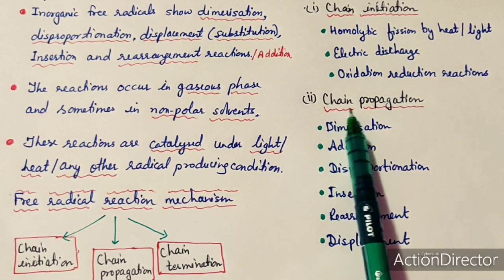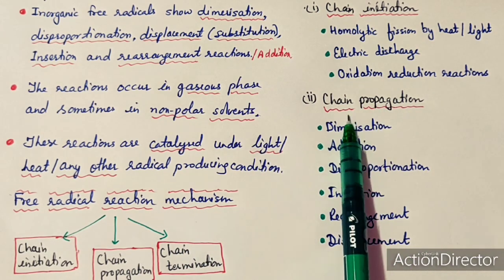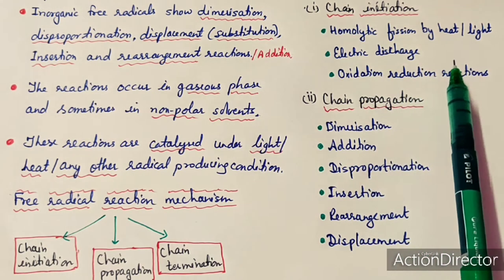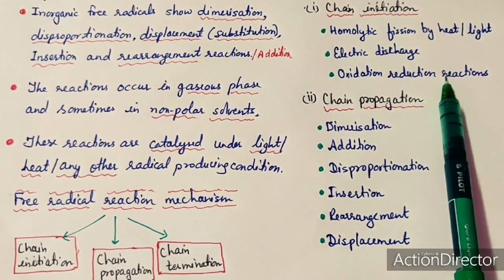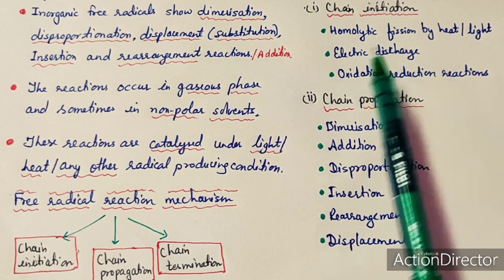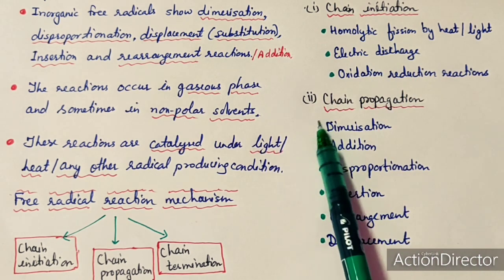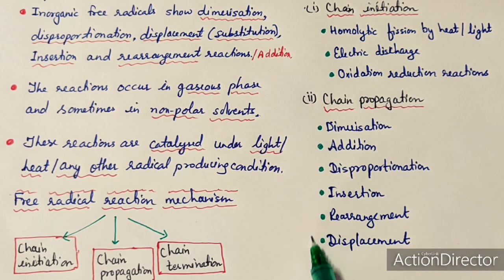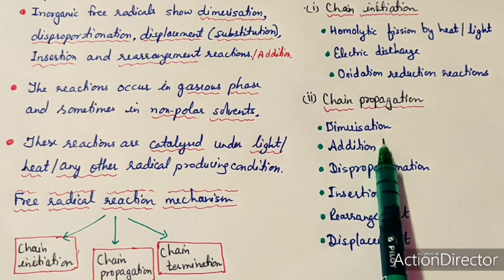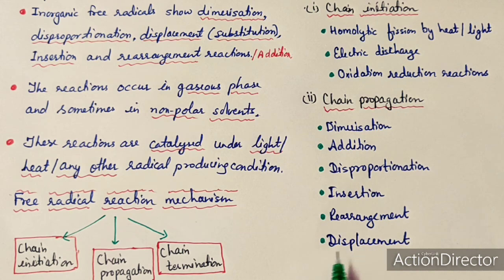The second step is chain propagation. In chain propagation, the free radicals synthesized in the chain initiation step undergo a number of reactions. These reactions may include dimerization, addition, polymerization, and others during chain propagation.